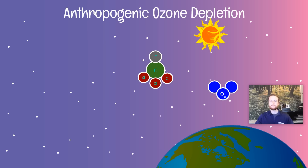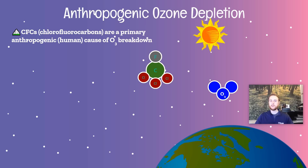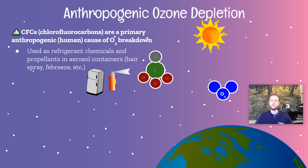Now we'll take a look at anthropogenic or human-driven ozone depletion. The primary way that humans lead to the breakdown of stratospheric ozone is through CFCs, or chlorofluorocarbons. This is a broad group of compounds that are used typically in coolants or refrigerants and also in propellants — anything that uses an aerosol canister. Hairspray, Axe body spray, Febreze — these would all be examples of products that might contain CFCs.